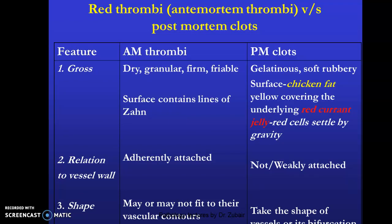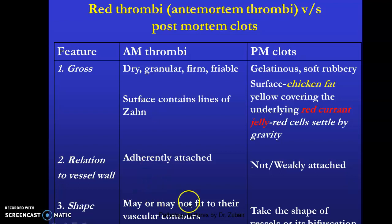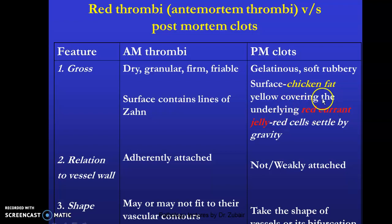From a forensic perspective during autopsy, it is important to distinguish an antemortem thrombus from a postmortem clot to establish cause of death. An antemortem thrombus is dry, granular, firm, and friable; its surface contains lines of Zahn; it is adherent to the vessel wall and may not fit the vascular contours. Postmortem clots, on the other hand, are gelatinous, soft, and rubbery, with a chicken-fat yellow appearance overlying red currant jelly. Red cells settle by gravity; they are weakly attached to the vessel wall and take the shape of the vessel or its bifurcation.